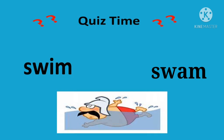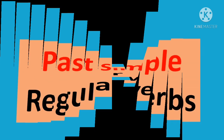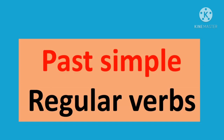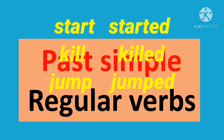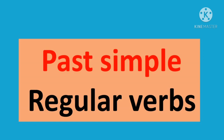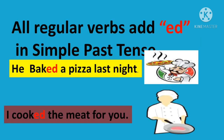Now let's discuss regular verbs. As we discussed earlier, regular simple past forms are formed by adding -ed to the infinitive of the verb. Like: start becomes started, kill becomes killed, jump becomes jumped. All regular verbs add -ed in simple past tense. For example: 'He baked a pizza last night' — baked, we have added -ed to the verb.